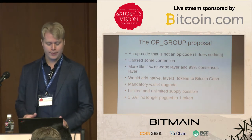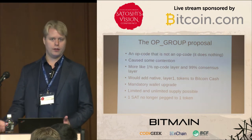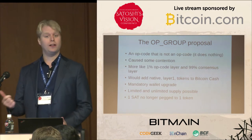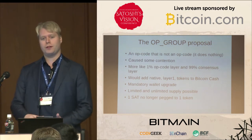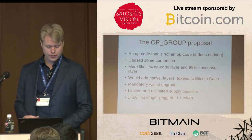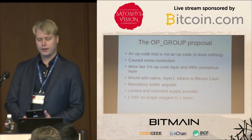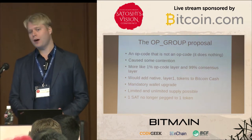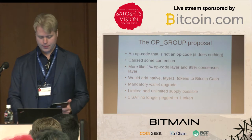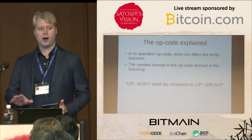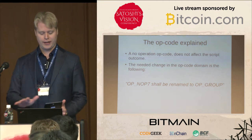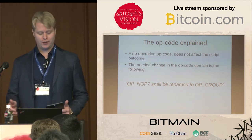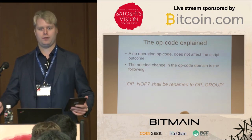OP_GROUP would add native layer-one tokens to Bitcoin Cash that are supported by every wallet — but it also means every wallet must support them. It is possible to have limited or unlimited supply, up to a certain point depending on how large the variables you want to use. One important thing to mention is that the first proposal had one token equal to one satoshi, but it has been updated since then, so that's no longer the case. If you only look at the opcode domain, the change is very small — tiny. The only change an opcode workgroup would review is that OP_NOP7 should be renamed to OP_GROUP. That is the only change in the opcode domain. The rest is consensus.